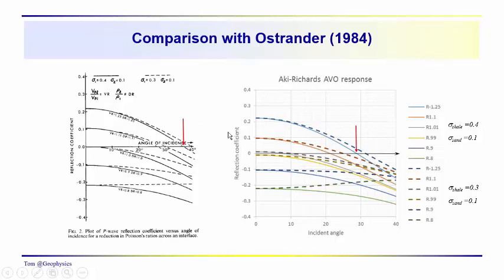Looking at the VP/VS equal 1.25 curves, we have a crossover using the Aki-Richards response at about 28.5 degrees here, probably about 37. For Poisson's ratio 0.3 in the shale and 0.1 in the sand, this dashed curve extends on out. It does rise above but crosses zero around 31 degrees. Over here it doesn't quite cross zero until around 40 degrees.